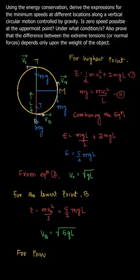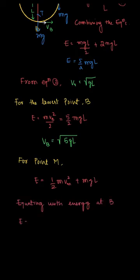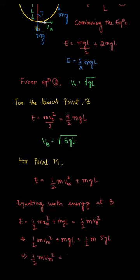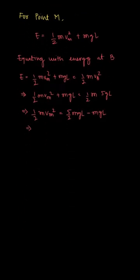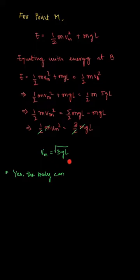For the midpoint, the energy equation gives E equals half m vm squared plus mgl. Equating this to the energy at the bottom point: half m vm squared plus mgl equals half m vb squared. Solving the equations, the velocity at the midpoint comes out to be vm equals root over 3gl.